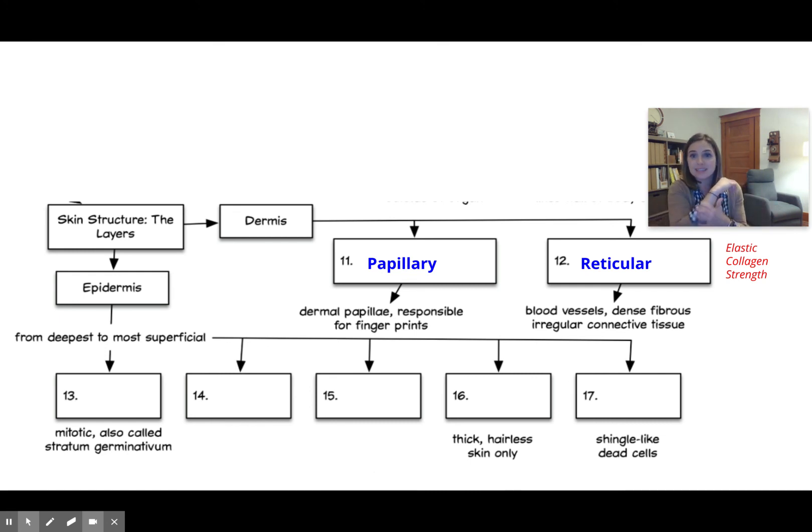So our deepest layer that does mitosis is called stratum basale. We did not use the term germinativum - some older textbooks might use that, but that's not something you have to worry about for this test. Moving up, then we have stratum spinosum. That is where you're gonna find a lot of the dendritic cells that work in function to be part of your immune response.